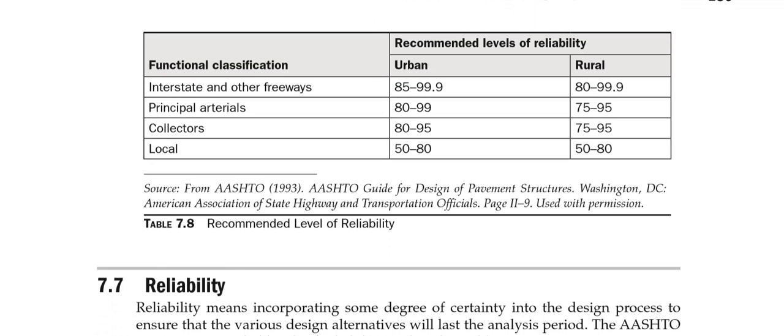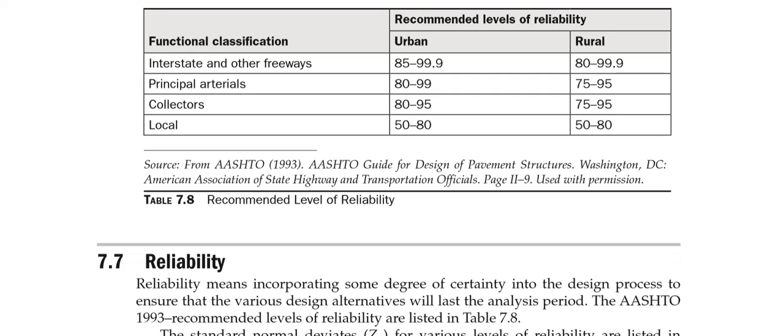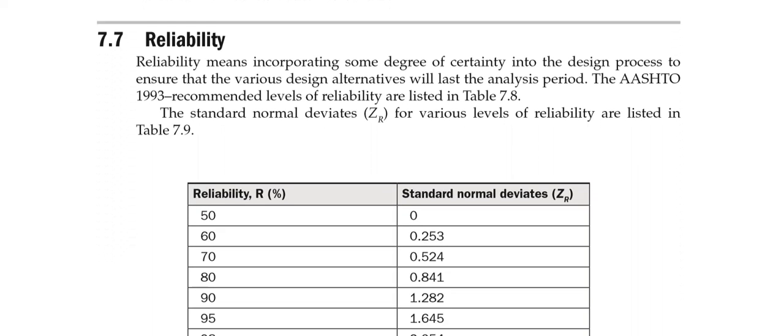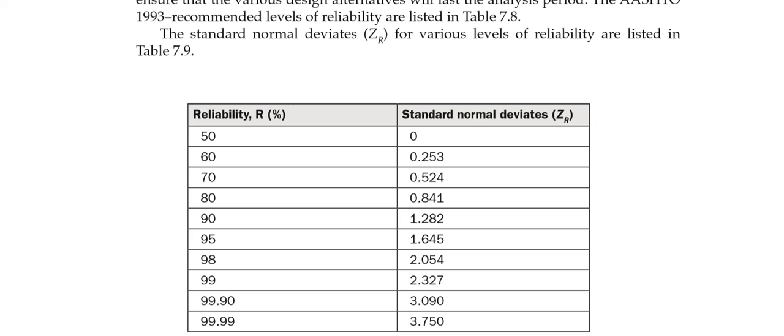For reliability, AASHTO provides guidelines: for urban interstates use 85% to 99.9%, for local urban roads 50–80%, and for rural roads 50–80%. To find the standard normal deviate Zr, simply read from a table. For 90% reliability, Zr = 1.282 — this is the most common design case and worth memorizing. For 98% reliability, Zr = 2.054. This value comes from the standard normal distribution covered in statistics.